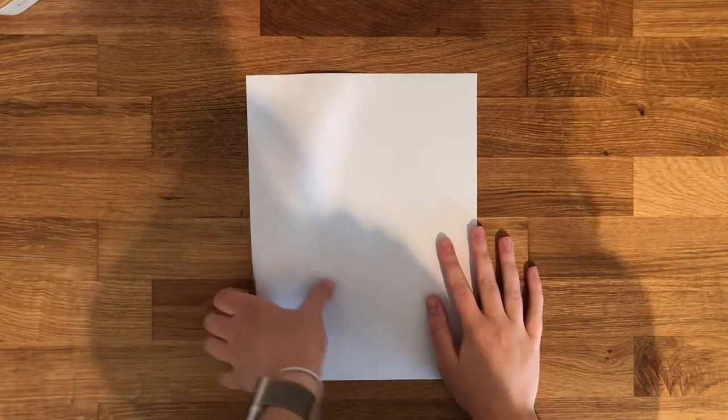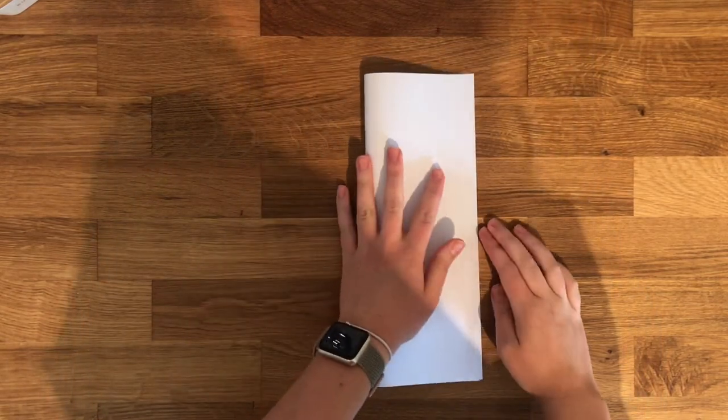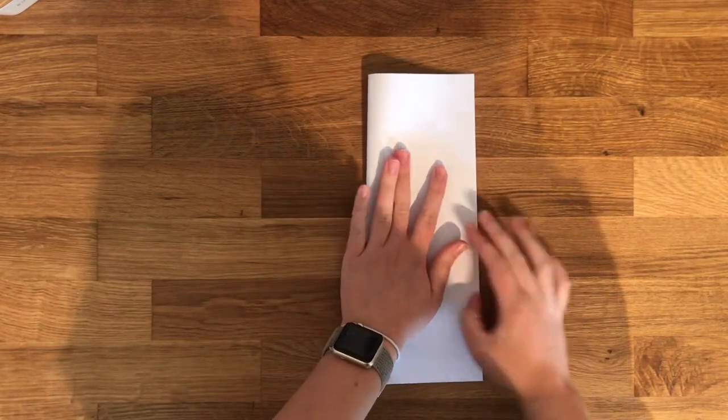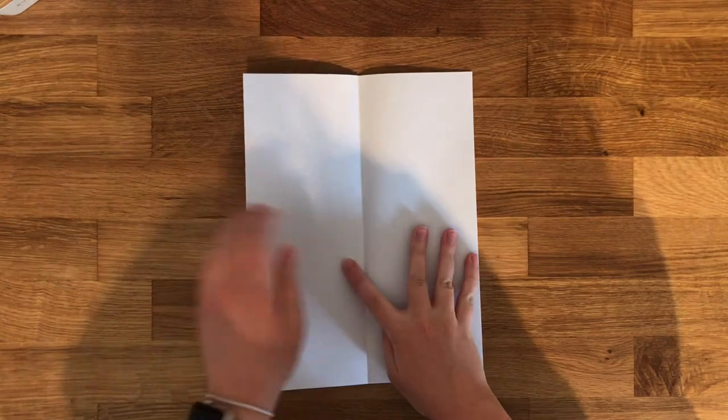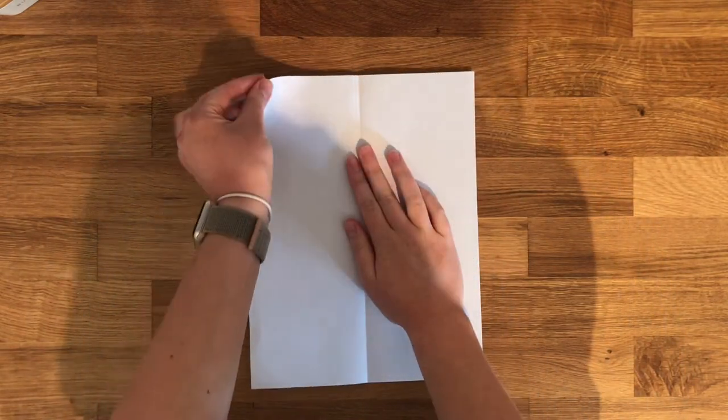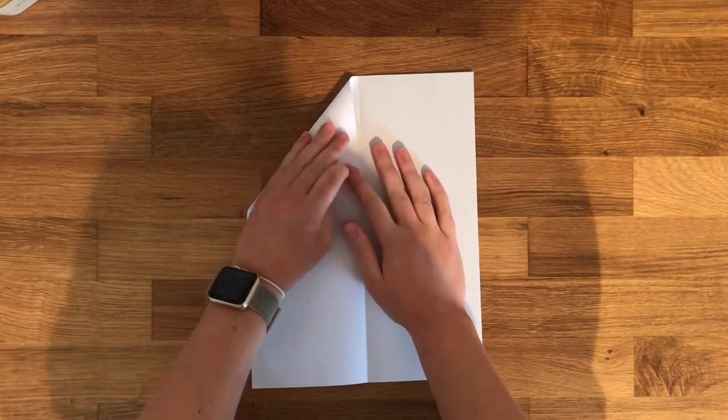First I'm going to show you how to make a classic paper airplane. You're going to fold the paper in half hot dog style, just like this. Then you're going to unfold the paper and fold the top two corners towards the middle to make a point.